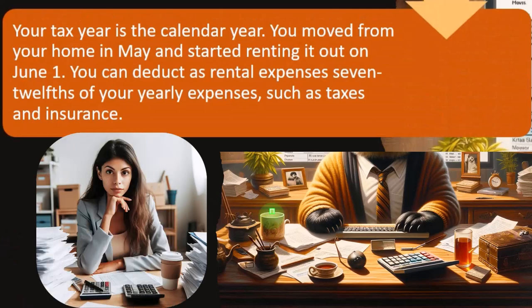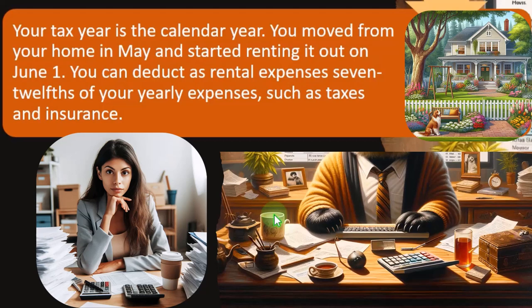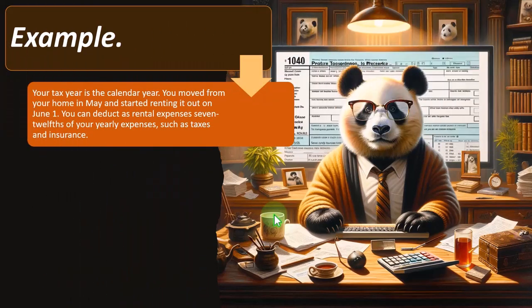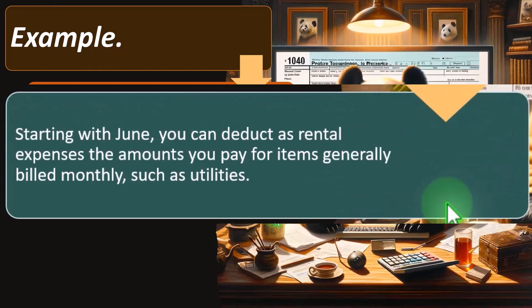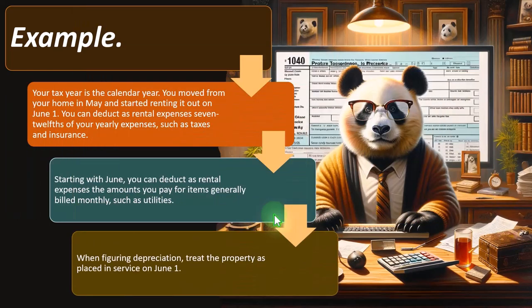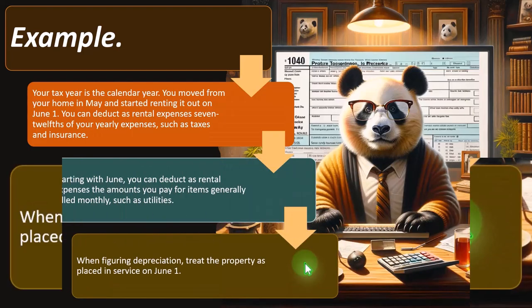For example: your tax year is the calendar year and you moved from your home in May, starting to rent it out on June 1st. You can deduct as rental expenses seven-twelfths of your yearly expenses such as taxes and insurance. Some expenses — like maintenance done during the rental period — don't need to be allocated over the year. But expenses like property taxes and depreciation are calculated annually, so you must figure the portion for the rental period. Starting with June, you can deduct amounts billed monthly such as utilities. When figuring depreciation, treat the property as placed in service on June 1st.